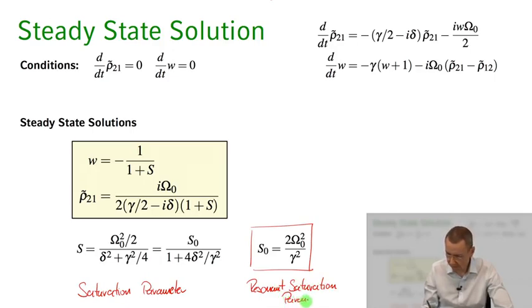Because s turns into s₀ for the detuning going to 0. So you see here the saturation parameter when the detuning goes to 0, this just equals s₀. And s₀ that's just the ratio actually of coherent drive in the system, the Rabi frequency squared, divided by γ squared, the damping we have in the system.